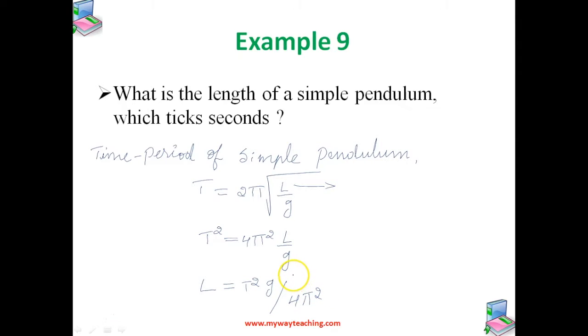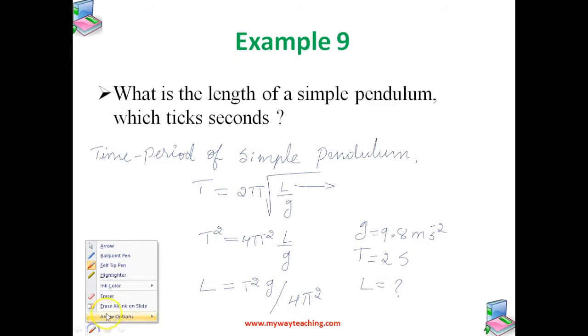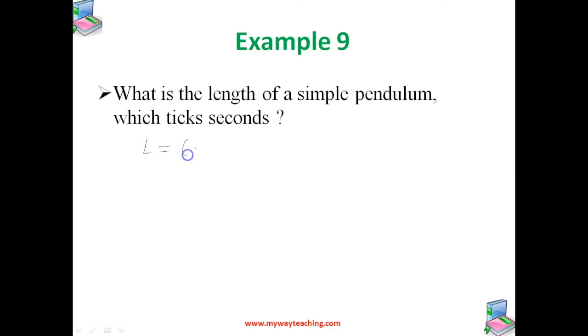The time period of a simple pendulum which ticks seconds is 2 seconds. Therefore, for g equals 9.8 meters per second squared, we will take T as 2 seconds. Let us substitute the values: T squared is 2 squared, g is 9.8, by 4 pi squared. We get 1 meter, the value of L, that is the length of a simple pendulum.